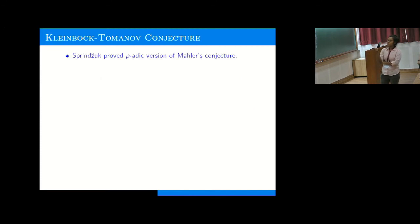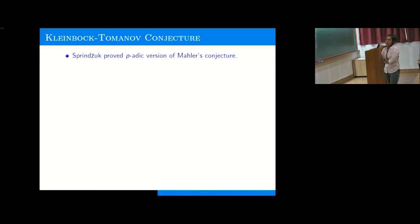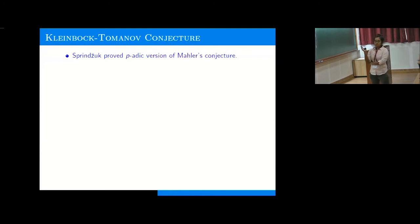Now I will move to the p-adic setup. Sprindžuk proved a p-adic version of the Mahler conjecture — namely, that if you take the curve (x, x^2, ..., x^n) in Q_p^n, then almost every point is not very well approximable. Then Kleinbock and Tomanov proved the p-adic version of Sprindžuk's conjecture in 2007, by proving a p-adic arithmetic version of quantitative non-divergence.